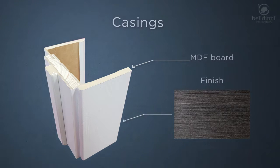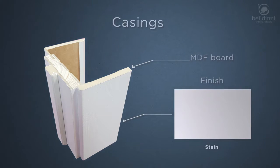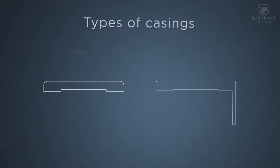Veneer, polypropylene, stain. There are two types of casings - flat and L-shaped.